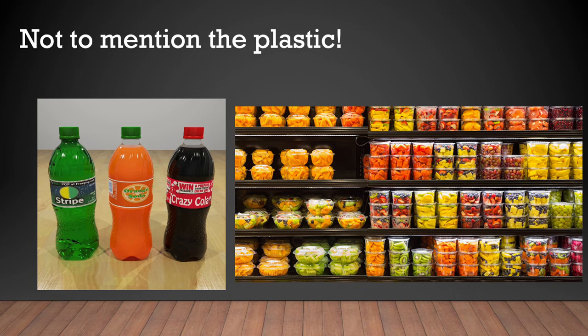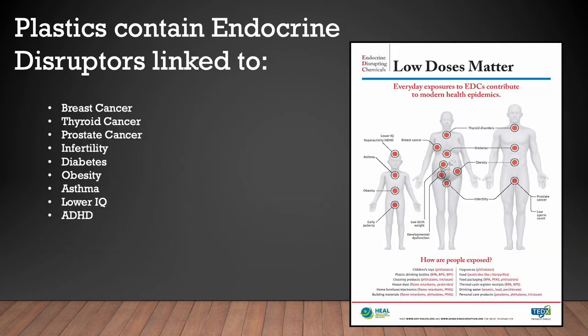Let's not forget the plastic that the sugar comes in. Plastic is equally as detrimental to human health as the sugar itself. Plastic contains endocrine disruptors linked to breast cancer, thyroid cancer, prostate cancer, infertility, diabetes, obesity, asthma, lower IQ, and ADHD. An endocrine disruptor is essentially a synthetic molecule that acts like a hormone. As it flows through the human body, it disrupts our hormonal balance, throwing everything out of whack on a chemical and hormonal level. These are very chronic, low doses that happen over a lifetime — not from one meal, but concurrently over many years. The effects build up until eventually they become a problem.